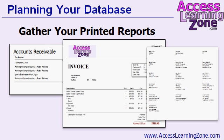The next step: gather together all of your printed reports. You probably have paper forms you're using now, or at least reports you've been generating with Excel or Microsoft Word. Get those all together so you can see the different types of reports you're going to need to generate from your database. For example, here I've got an accounts receivable report, an invoice, and some mailing labels. Make a list of all the different types of reports you expect your database to generate.